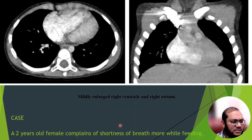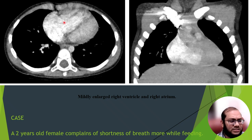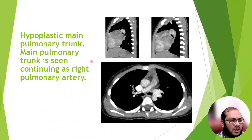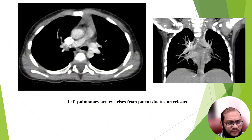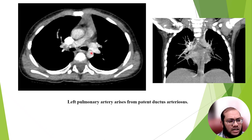In this case, a 2-year-old female presented with complaints of shortness of breath, more while feeding. Here we can see the right atrium and the right ventricle are mildly enlarged. The main pulmonary trunk is also hypoplastic and it continues as the right pulmonary artery. The left pulmonary artery arises from a patent ductus arteriosus.